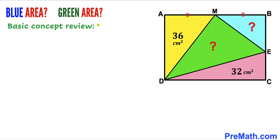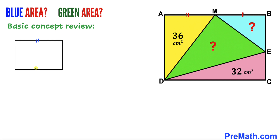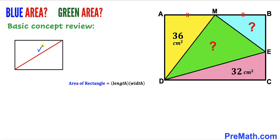Before we proceed any further, let me go over a basic review. For a rectangle: all angles are 90 degrees, and opposite side lengths are equal and parallel. The area of a rectangle equals length times width. If we draw a diagonal, the area of the rectangle is divided into two equal parts — so if one triangle has area 10, the other has area 10 as well.